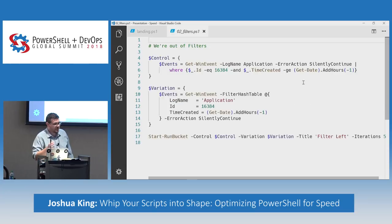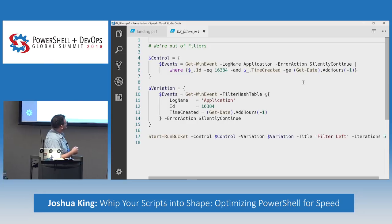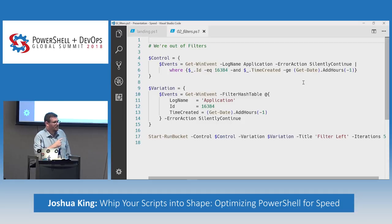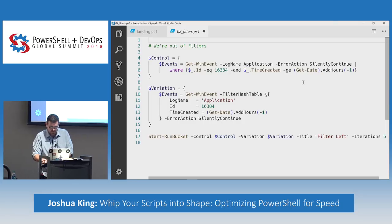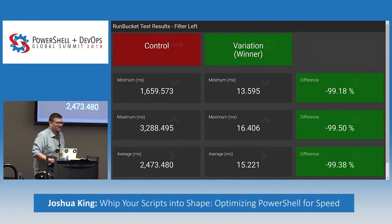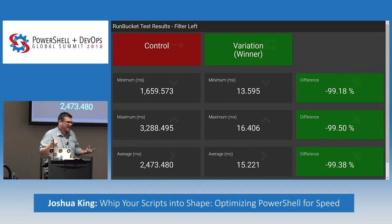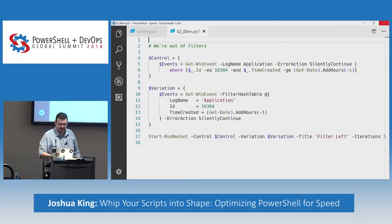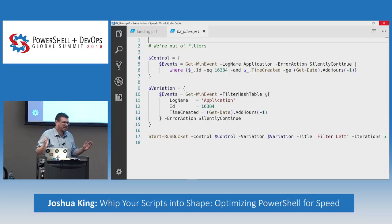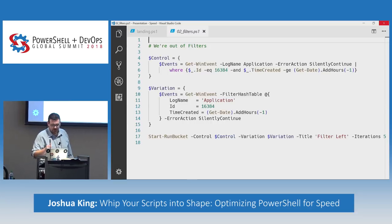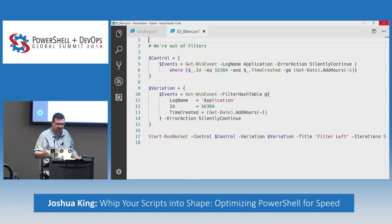But Get-WinEvent lets you filter directly on the cmdlet using a filter hash table. This is probably going to be the one with the most significant improvement today. Just by changing from a pipeline to Where-Object, we've dropped from 2.5 seconds to 15 milliseconds. Conceptually, that makes sense — the control grabs everything in the application log, chucks it through the pipeline, and then figures out which bits it needs. Whereas with a filter hash table, it's not dealing with the extra data it doesn't need.